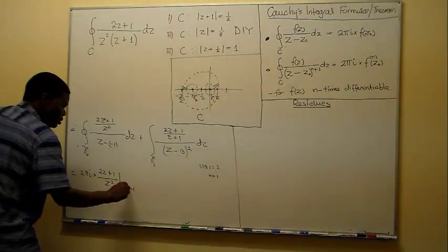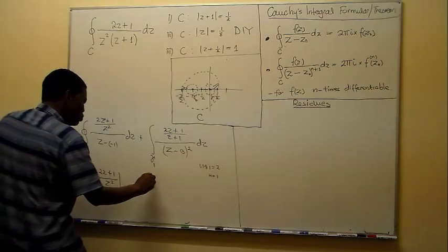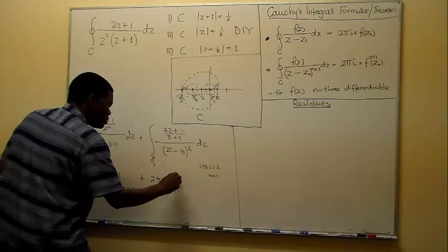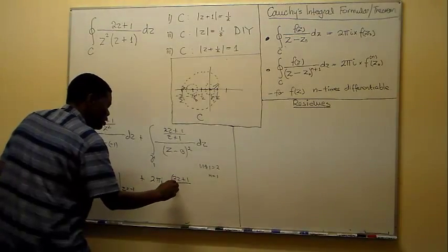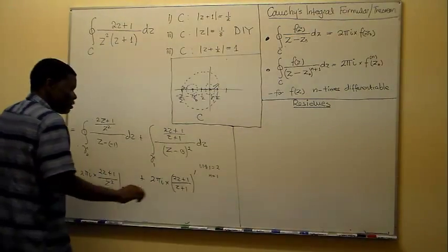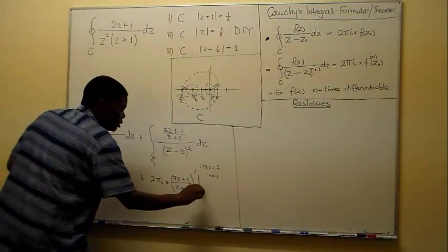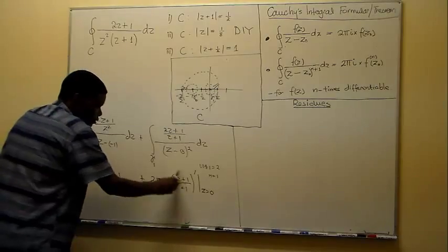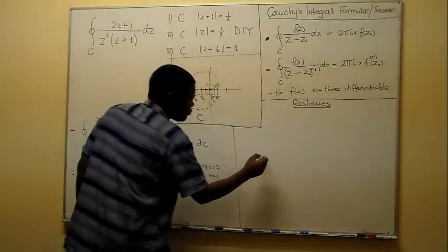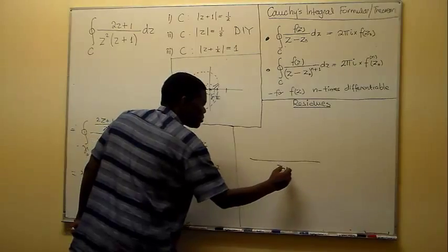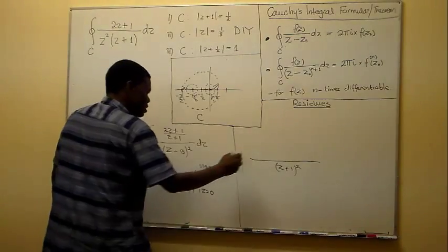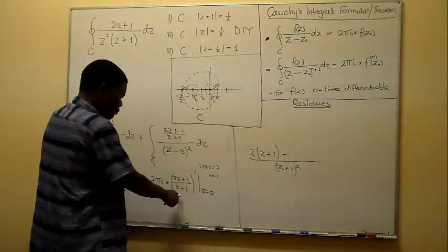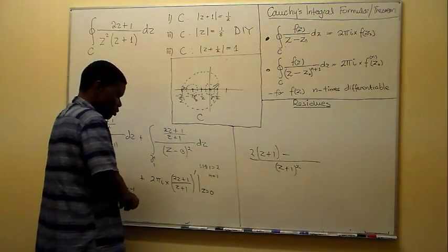That gives the first term. For the second term we have 2πi multiplied by the first derivative of (2z + 1) over (z + 1), evaluated at z = 0. We differentiate using the quotient rule: differentiate the numerator — getting 2 times (z + 1) — minus the numerator times the derivative of the denominator — which is 1 — all over (z + 1) squared.